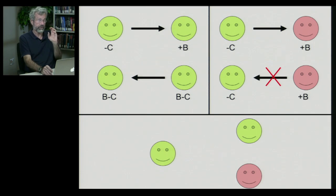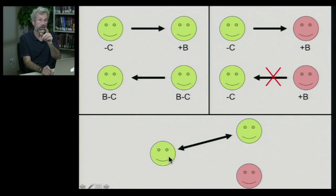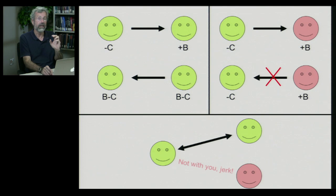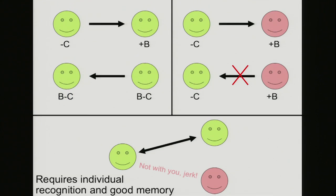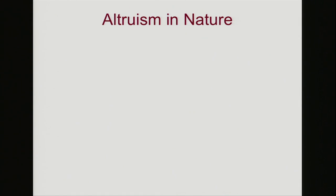For reciprocal altruism to be important, an individual has to be able to say: 'You're a good guy, I know you'll exchange cooperative behavior with me — but not you, jerk.' So individuals have to have the ability to recognize each other and to remember: 'I know who you are and I remember what you did. If you're a nice guy, let's keep cooperating; if you're a jerk, forget it — I don't have anything else to do with you.'